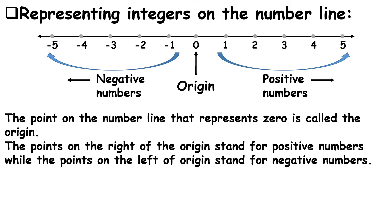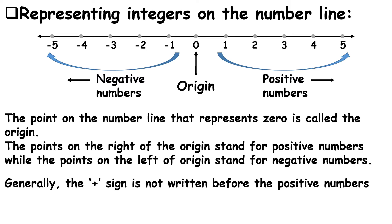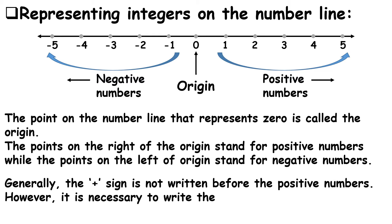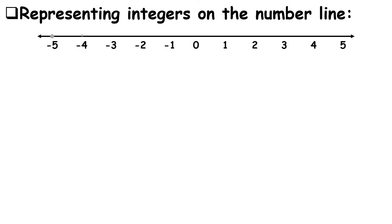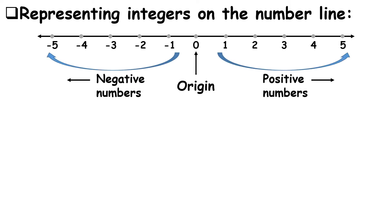Generally, the plus sign is not written before positive numbers. However, it is necessary to write the minus sign before a negative number. Zero does not have any sign. So it is right to say that numbers on the right side of zero are called positive numbers and numbers on the left side of zero are known as negative numbers.